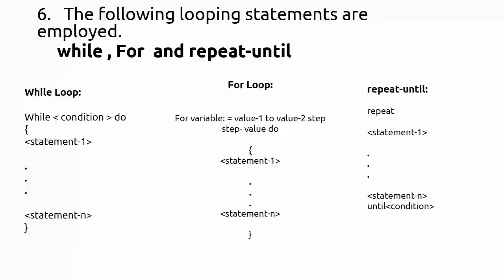The repeat-until loop is similar to do-while in C. You write 'repeat { statement1 ... statementN } until (condition)'. It is an exit-controlled loop — all statements execute first, then the condition is checked. This contrasts with the while loop, which is an entry-controlled loop where the condition is checked before executing the block.